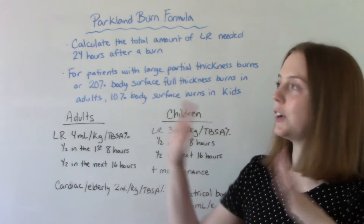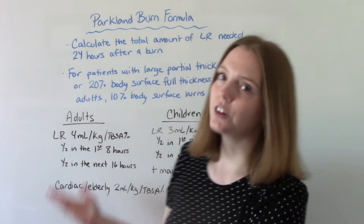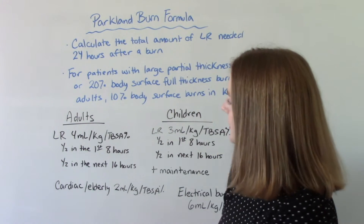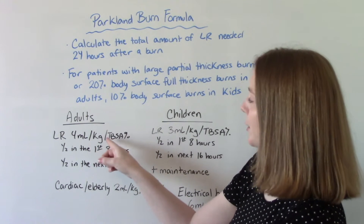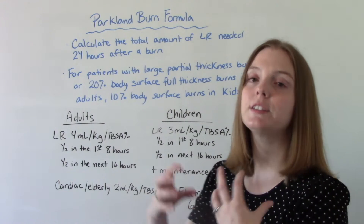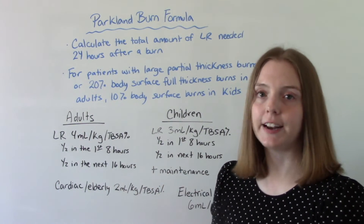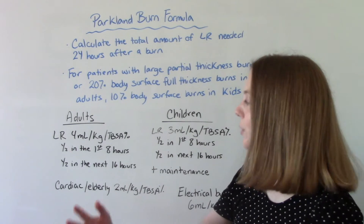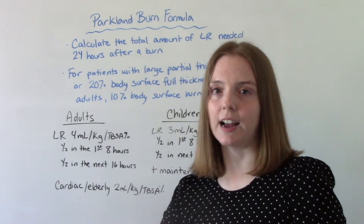Different people and different ages have different requirements. In adults, our fluid replacement is going to be 4 mls per kilogram per total body surface area percentage. We're going to give half of that in the first 8 hours, and then we're going to space it out and give the second half of that amount over the next 16 hours.